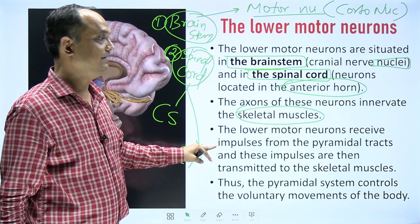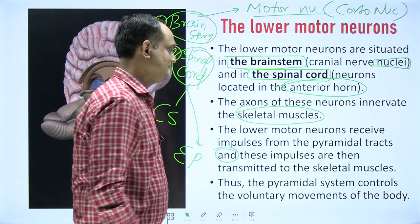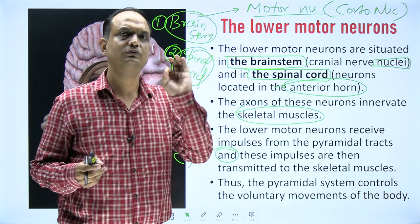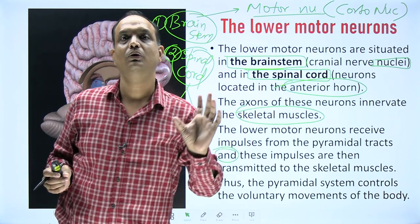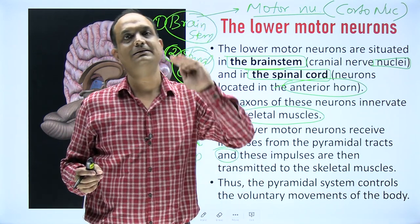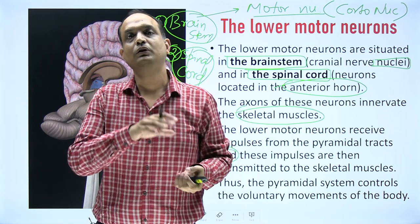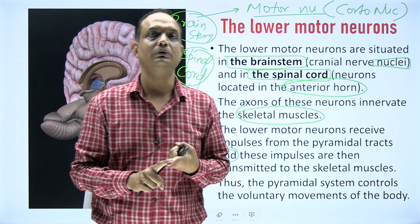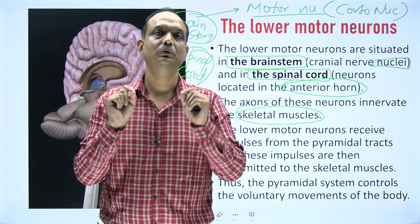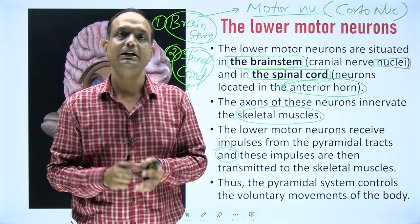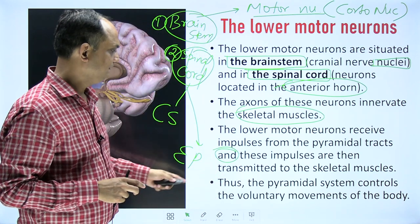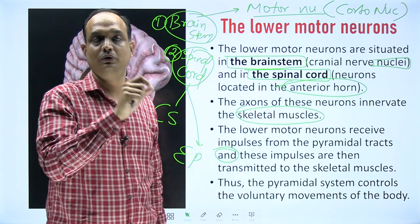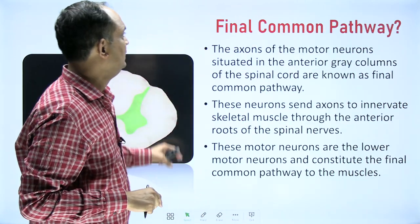Lower motor neurons receive impulses from the pyramidal tract and transmit them to skeletal muscles. Location of upper motor neurons: different parts of the brain. Location of lower motor neurons: brainstem (motor nuclei of cranial nerves) and spinal cord (anterior horn cells). The pyramidal system controls voluntary movement by descending and controlling both the motor nuclei of cranial nerves and the anterior horn cells.